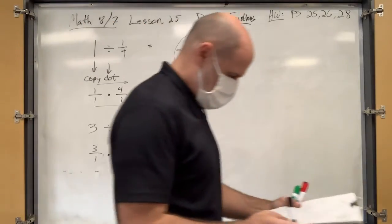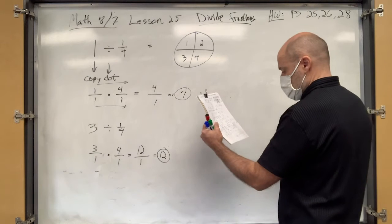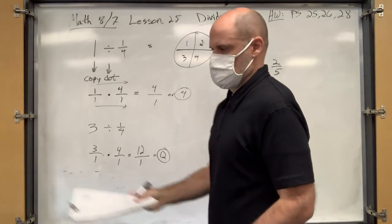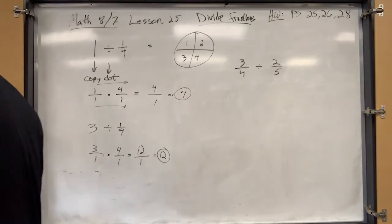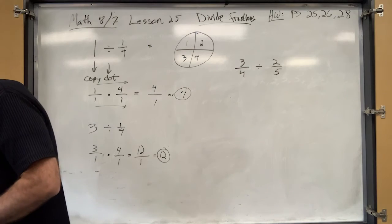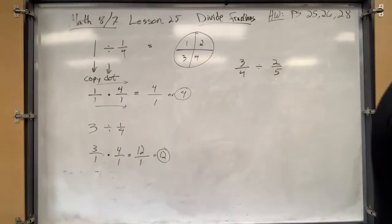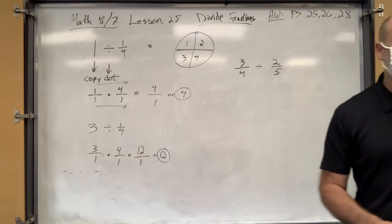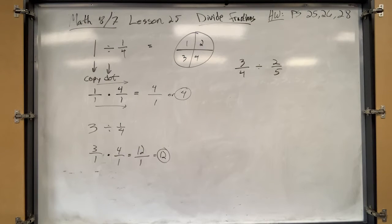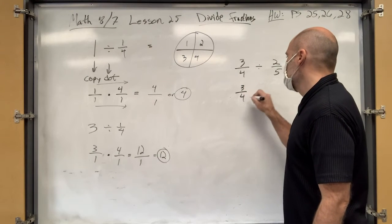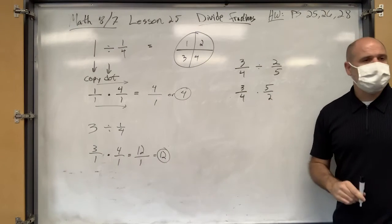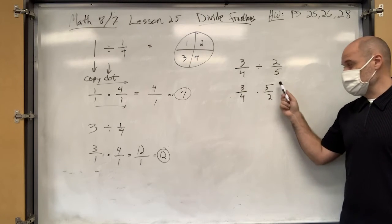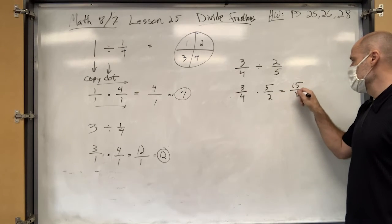Alright, so I don't like those kind of division problems. I like the ones that are actually dealing with fractions. So let's do this. Let's go three-fourths divided by two-fifths. Ready? Go! See if you can do that one. Grace has got an answer. What'd you get? One-fourth or five-twentieths. One-fourth or five-twentieths. Anyone get anything different? Any other answers? Kiara? Three-fifths. Three-fifths? Okay. Any other answers? Yeah. Fifteen-eighths. That's the right answer. Let's do this. Three-fourths. Dot. Flop.